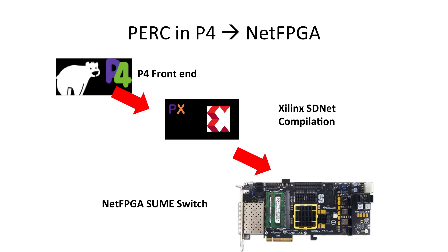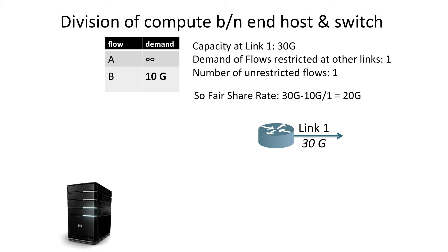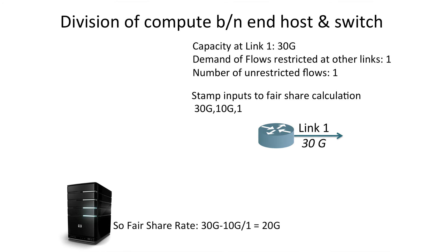As a first step to realize this, we wrote up a version of PERC using P4 and compiled it to a NetFPGA using tools from Xilinx. This P4 program used the most basic version of P4, reflecting a very simple programmable forwarding plane. I had to modify the original scheme considerably to make it simple enough for P4 — for example, basic P4 doesn't have division, so I moved the division to the end host and the switches just copy the raw inputs to the division onto the packet. If the switch is more flexible, you can move computation between the switch and end host in different ways.